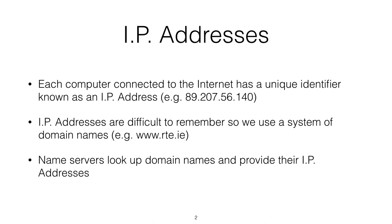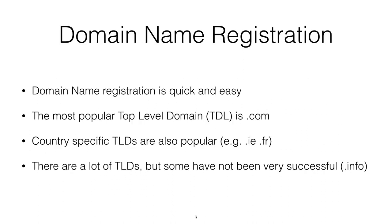So we use a system of domain names, so we can have domain names like rte.ie or cit.ie or cnn.com. Name servers on the internet look up domain names and provide their corresponding IP addresses so that our browsers can find those computers on the internet.